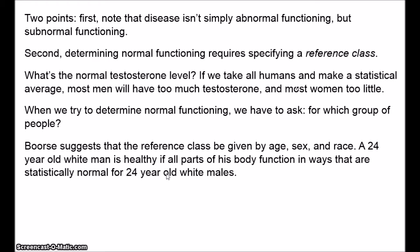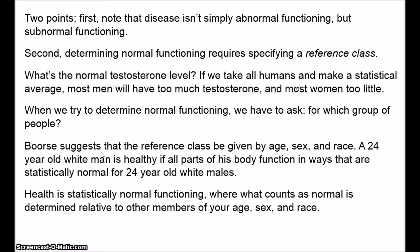Obviously, that's going to be different to what's statistically normal for 75-year-old Asian women or for 3-year-old African girls. Boorse wants to say that health is statistically normal functioning, where normality is determined relative to other members of one's age, sex, and ethnic background. It's a reasonably simple idea and it does help to explain certain facts about diseases. For instance, colour blindness is a disease even though it rarely causes any problems, whereas smell blindness to carbon dioxide isn't a disease even though it can be fatal — simply because smell blindness to carbon dioxide is typical of the species, whereas colour blindness isn't.